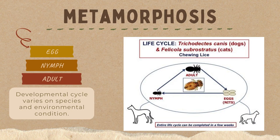Order Malophaga has incomplete metamorphosis. They are hemimetabolous, meaning they undergo simple and gradual metamorphosis from egg, to nymph, then to adult.